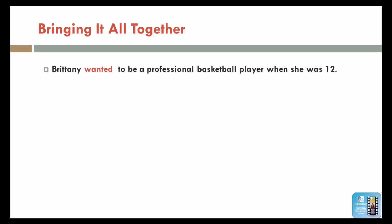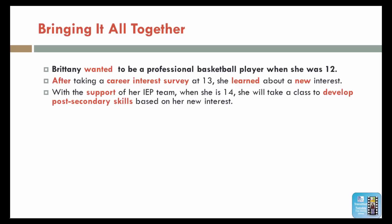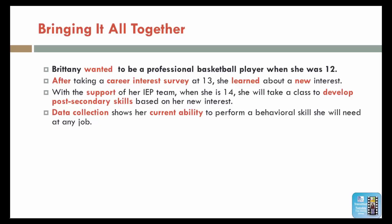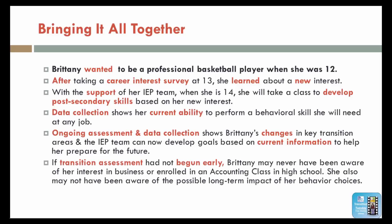So let's bring this information about Brittany all together. First, Brittany wanted to be a professional basketball player when she was 12. After taking a career interest inventory at 13, she learned about a new interest. With the support of her IEP team when she was 14, she will take a class to develop post-secondary skills based on her new interest. Data collection shows her current ability to perform a skill she will need at any job. Ongoing assessment and data collection shows Brittany's changes in key transition areas, and the IEP team can develop goals based on current information to help her prepare for her future. And if the transition assessment had not begun early, Brittany may never have been aware of her interest in business or in enrolling in an accounting class in high school. She also may not have been aware of the possible long-term impact of her behavior choices.